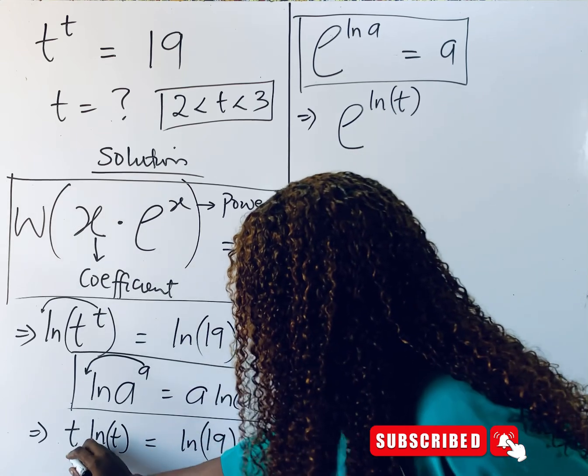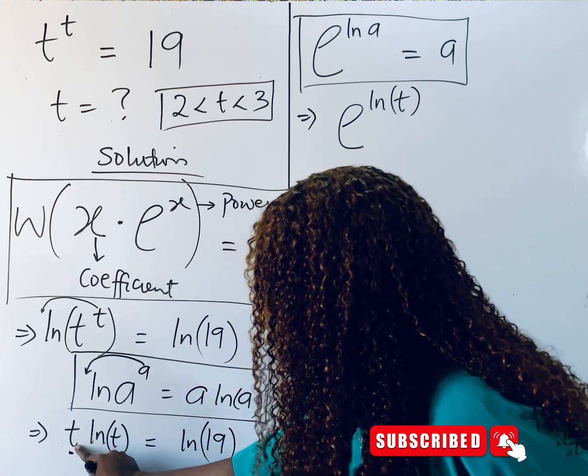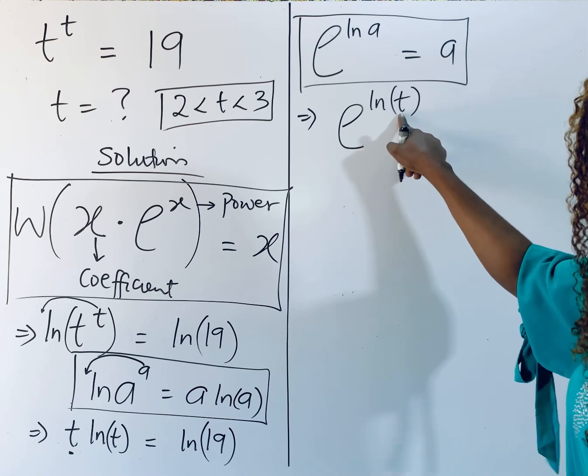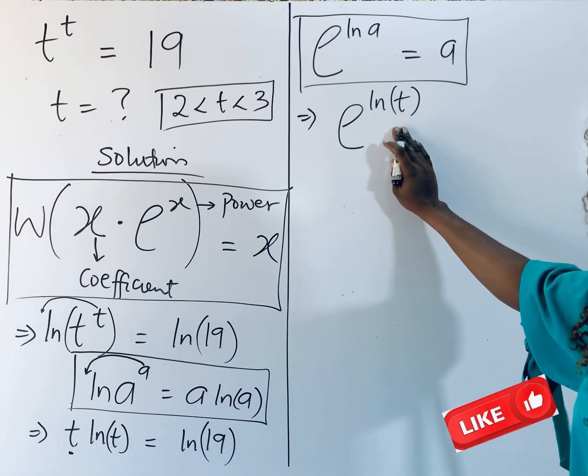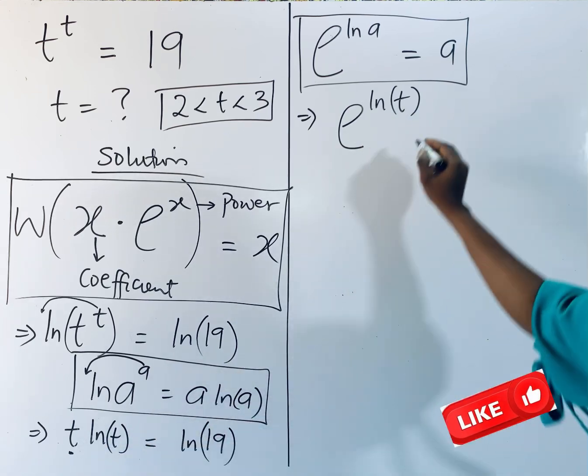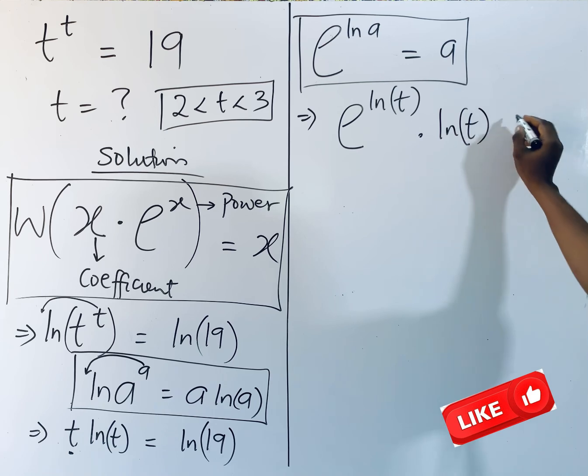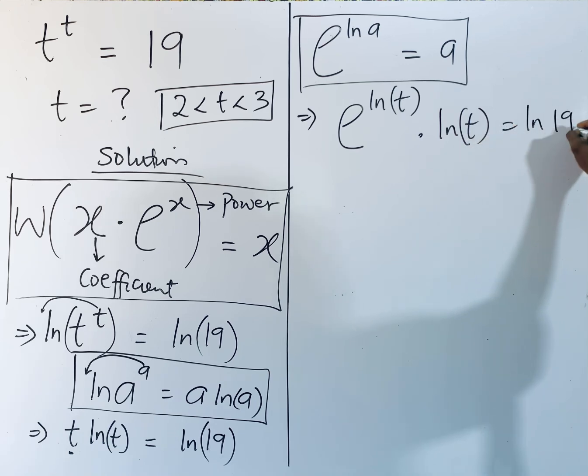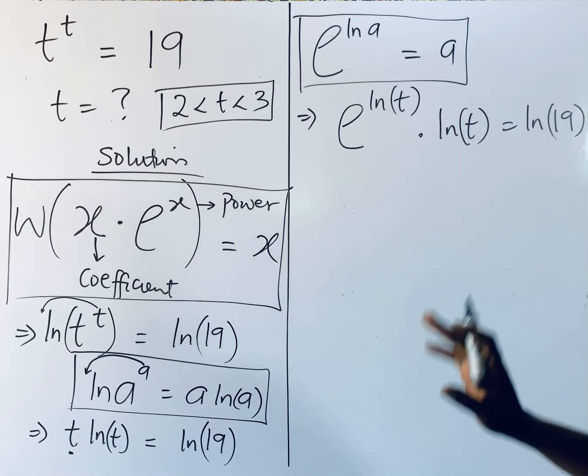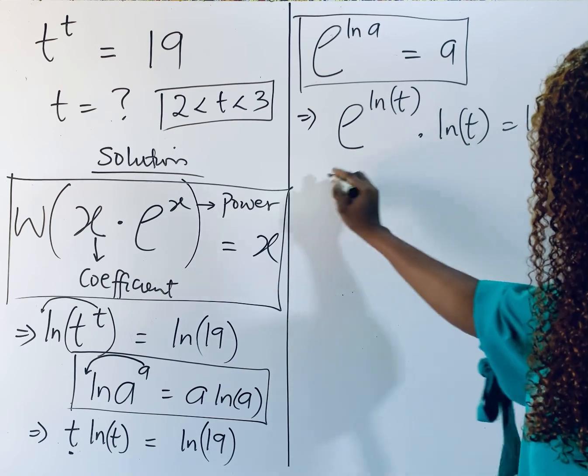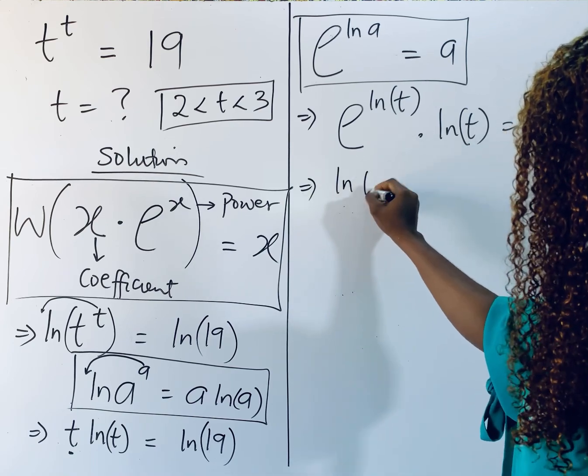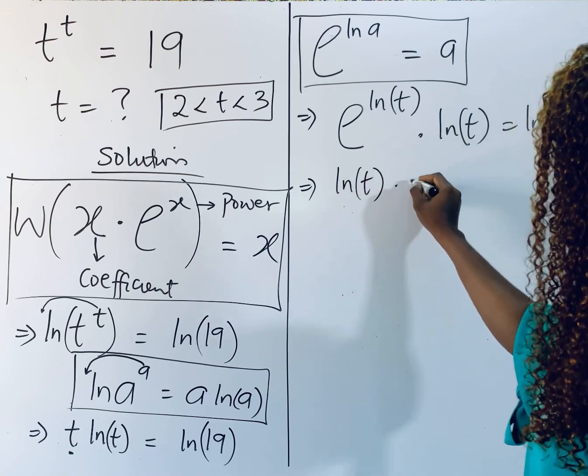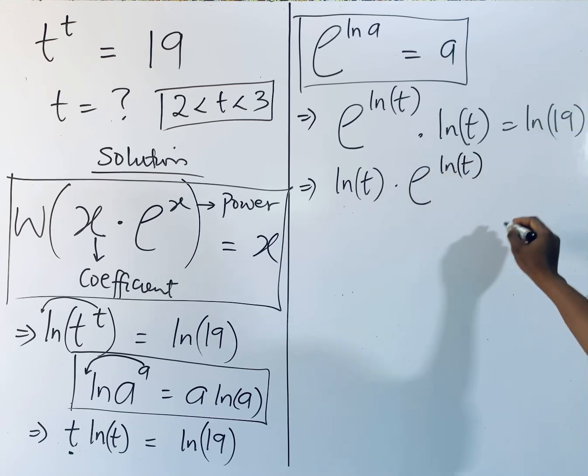You have not changed anything for this t. You just did this to be in this form. Remember that when you do it this way, it is the same thing as t. So we have transformed it to be in this form. Then multiply it by ln of t, and that will equal ln of 19. Now you observe that you can switch this, so you can rearrange them to give you: ln of t is multiplying e to the power of ln of t equals ln of 19.